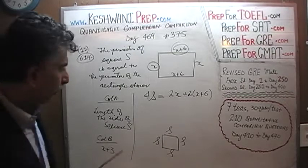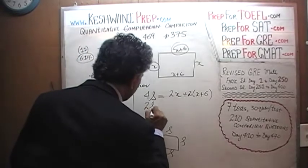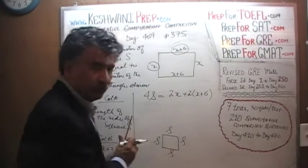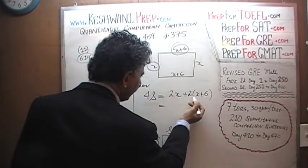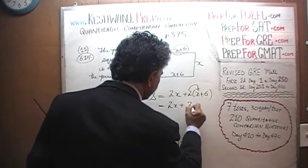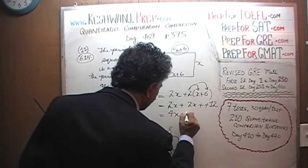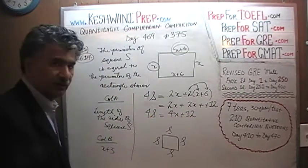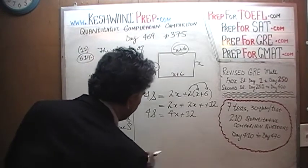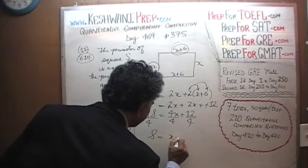Let's combine: 2x plus 2x plus 12 gives us 4x plus 12, and that equals four times each side. Divide the entire equation by four. If we divide the entire equation by four, what we find is that s equals x plus 3.